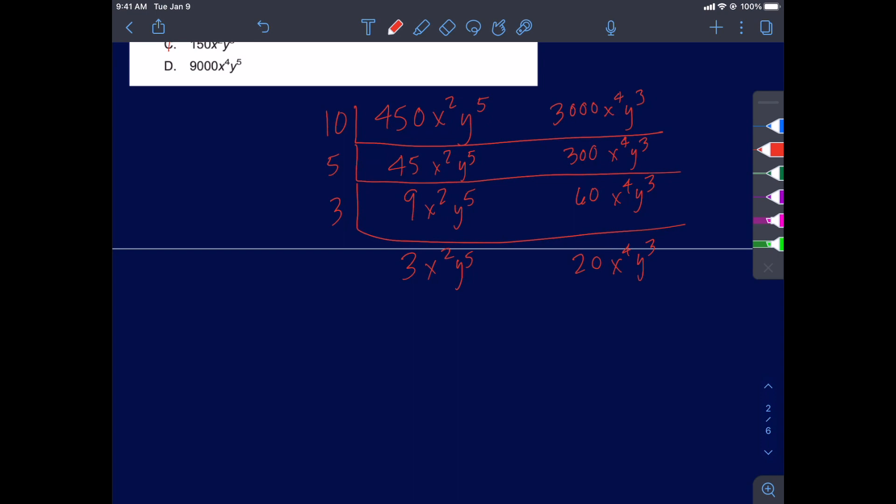But let's look at the variables. X squared means x times x, meaning two factors of x. X to the 4th means four factors of x. So we're looking for common factors. Wait, I thought we were looking for the least common multiple. We are, I promise. We're using the greatest common factor to help us get there. So since they both have two factors of x, they both have x squared in common.